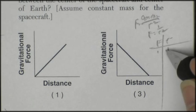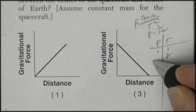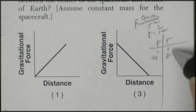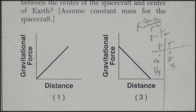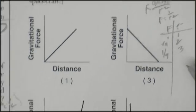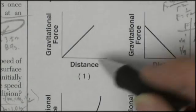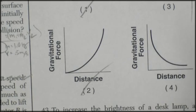then my force is 1 divided by 1 squared, 1. If this is 2, then it's 1 fourth. And if it's 3, it's 1 ninth. So basically, I'm looking for a graph that goes down. As the distance gets further away, the gravitational force decreases. So it gets rid of 1 and 2 right off the bat. And in fact,